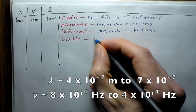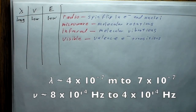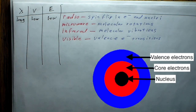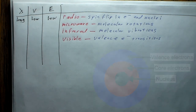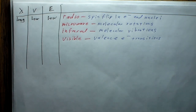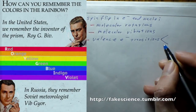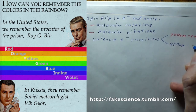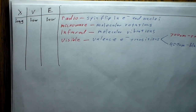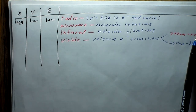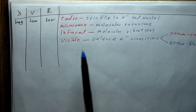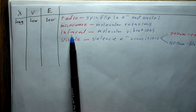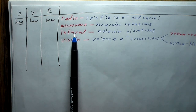Next up is visible light, and this corresponds to valence electron transitions. The valence electrons are the electrons on the outside of the atom — like the Neptunes and Plutos of a little solar system, very far from the nucleus, and responsible for bonding atoms to make molecules. Visible light ranges from about 700 nanometers at the low end, which is red, to about 400 nanometers, which is blue or violet. Remember ROYGBIV: red is your low-energy light and blue is your higher-energy light. This is also why the region below red is called infrared — it's before the red.